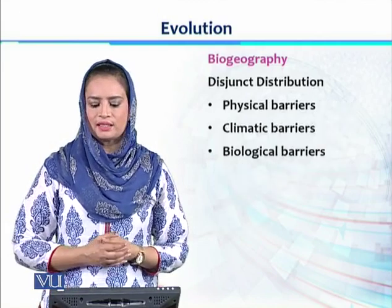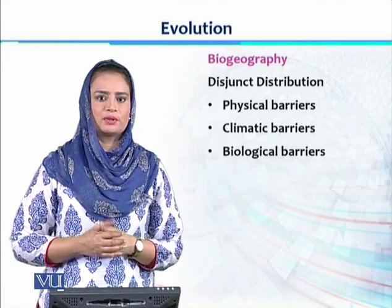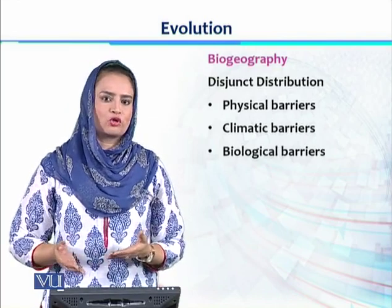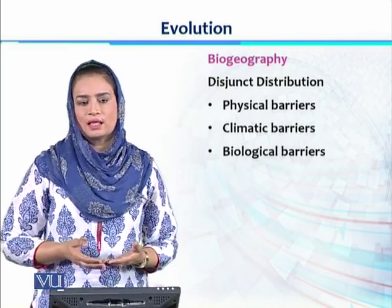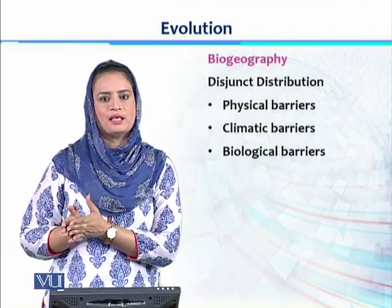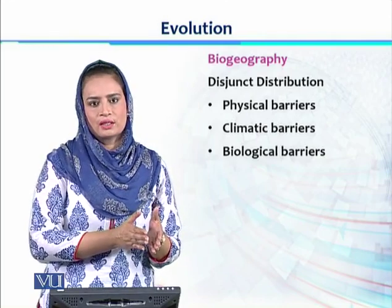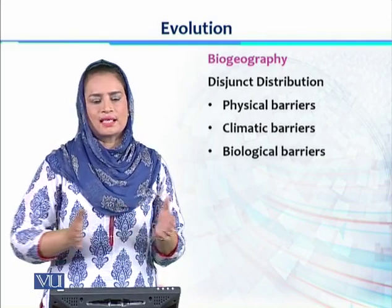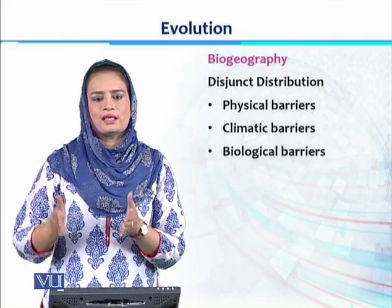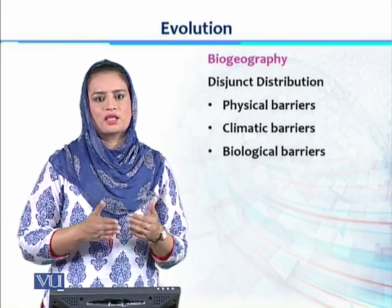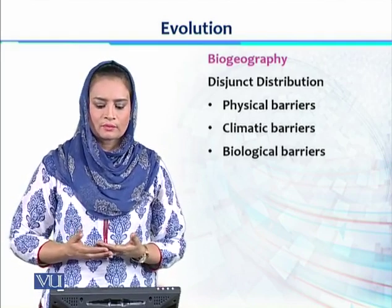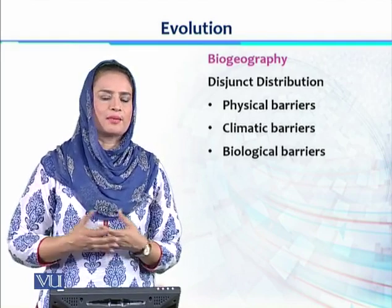These barriers are of three types. First, the physical barrier — such as mountains, rivers, oceans, and seas — because of which a population present in region A cannot move towards region B. This results in isolation, and due to this reproductive isolation, the species of region A and region B become very different from each other. The second type of barrier is the climatic barrier.